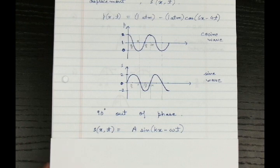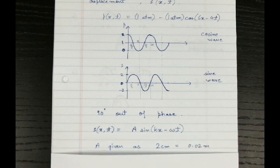So the k and omega will be the same as before. And let's say our amplitude to be 2 centimeters. So we write it in SI units 0.02 meters.